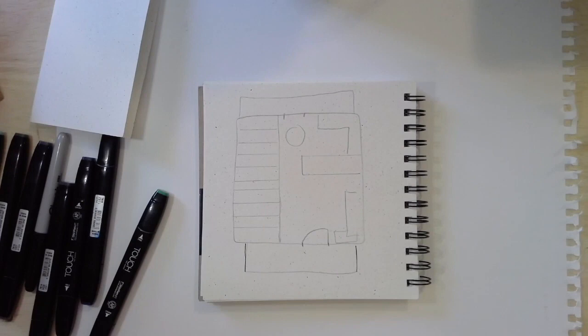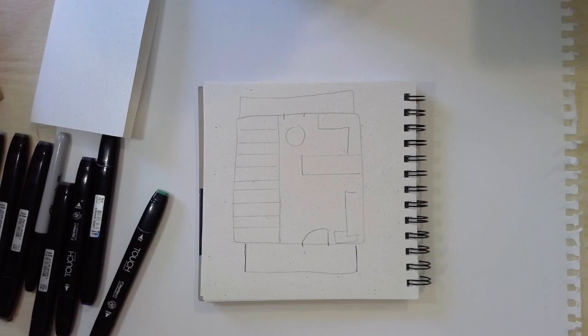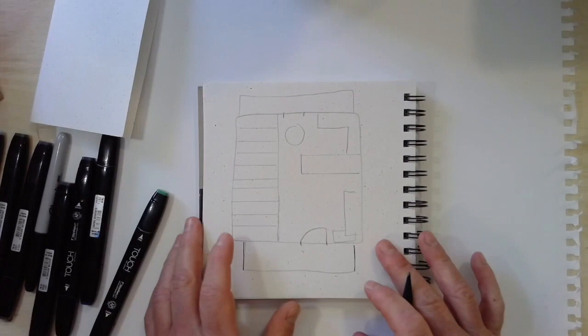Now, I'm going to start thinking about some other elements that kind of make her artwork unique, and we're going to try to include as many elements of art as a focus as we can. So we definitely have line, and we have some shape, rectangles and circles.